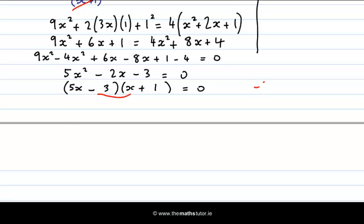That gives me minus 3x and this gives me plus 5x, which if I add them together gives me 2x. So that's wrong. So I need to try another one.